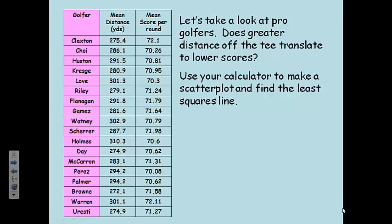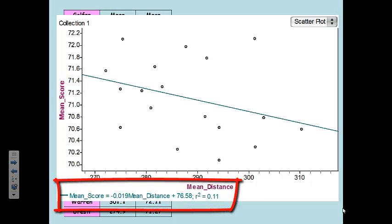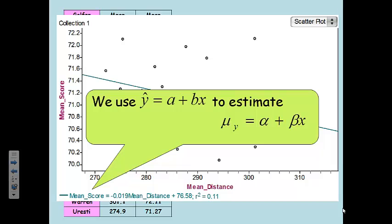Mean distance in list 1, mean score in list 2, do a linear regression, do a scatter plot, take a look and see what it is. And this is what it winds up looking like. Down at the very bottom, you can see the mean score formula. The estimated mean score is equal to negative 0.019, that's the slope, times the mean distance, plus 76.58, and it has an r-squared value of 0.11. We use y-hat, the mean score, the estimated mean score, to estimate mu sub y, the true numbers. We don't know what the true slope is or what the true equation is, but we can use this sample of golfers that we've developed to estimate the true slope.